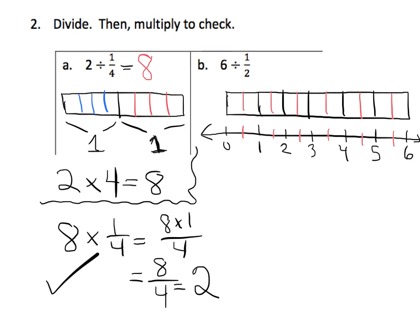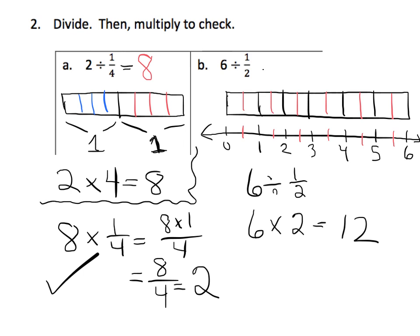How many halves are in 6 wholes? We can count: 1, 2, 3, 4, 5, 6, 7, 8, 9, 10, 11, 12. Each whole has 2 halves, so a quicker way to do this instead of doing 6 divided by 1 half, we could just say 6 times 2. Because each whole has 2 halves. So the answer is 12.